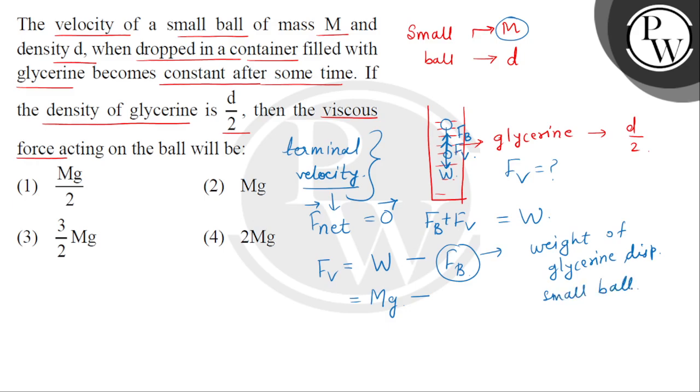अब इस glycerin की density क्या है हमारे पास, d by 2, तो कितना mass displaced होगा glycerin का, d by 2, then multiplied by the volume of the small ball multiplied by small g. So यहाँ पर अब हम इस M को क्या put कर सकते हैं? Mass of the ball को, mass of the ball can be put as the density of material of ball multiplied by its volume.